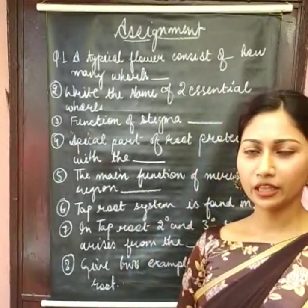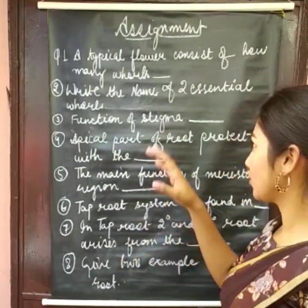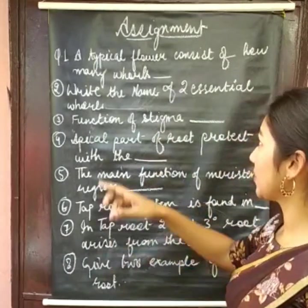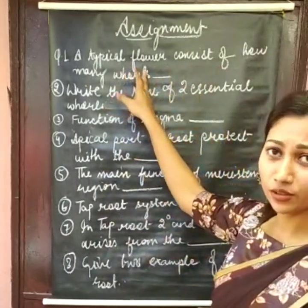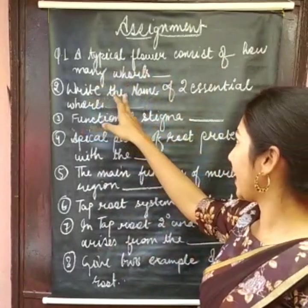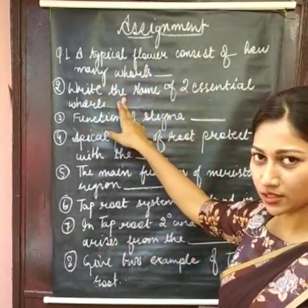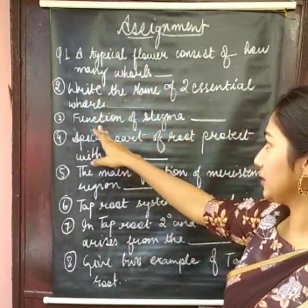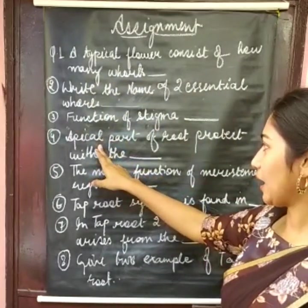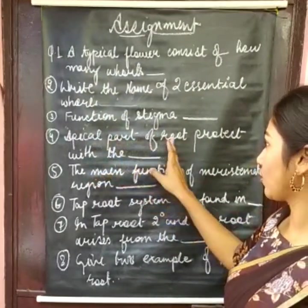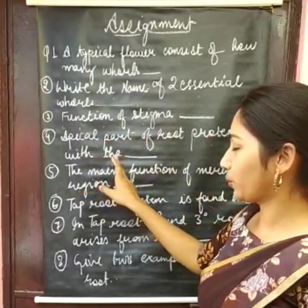First question: a typical flower consists of how many whorls? Second: write the name of two essential whorls. Third: what is the function of stigma? Fourth: the apical part of root is protected by which structure?